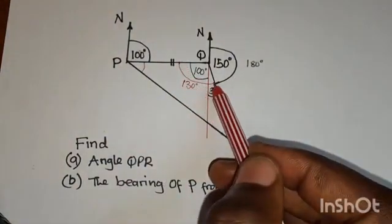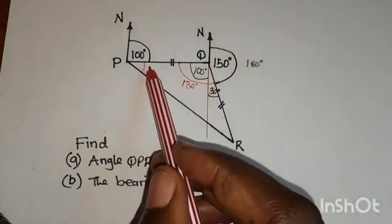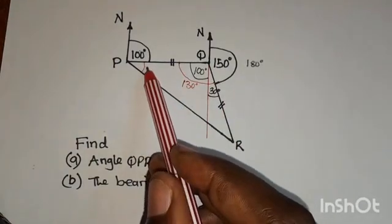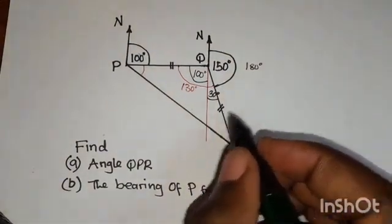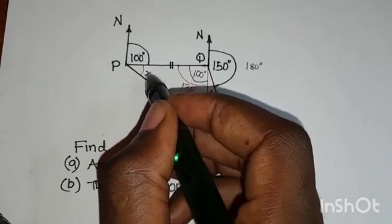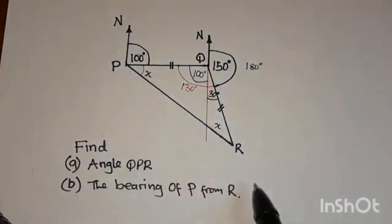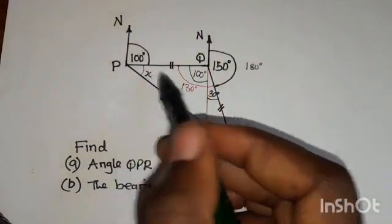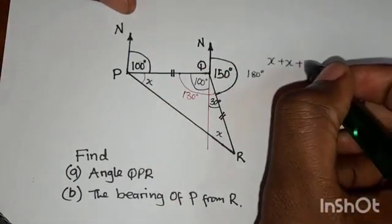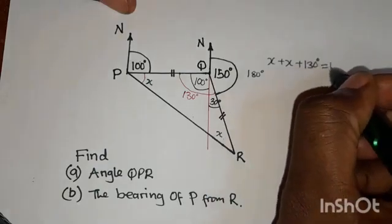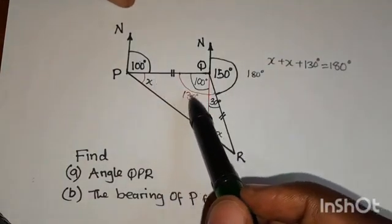We are going to use this 130-degree angle to find the unknown angle. Remember, this is an isosceles triangle, and an isosceles triangle has base angles that are equal. So this base angle equals this angle. We'll call each of them X. So we say: X plus X plus 130 degrees equals 180 degrees, using the property that the sum of angles in a triangle is 180 degrees.